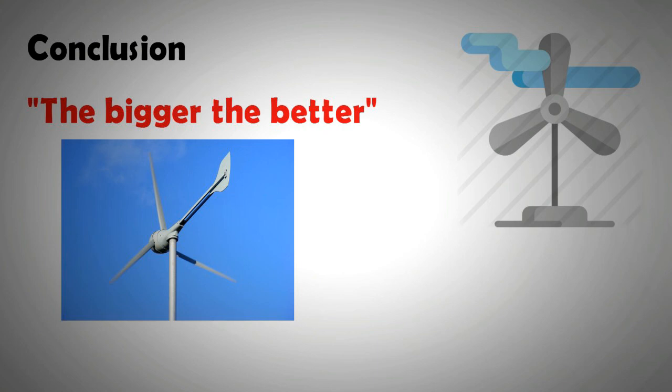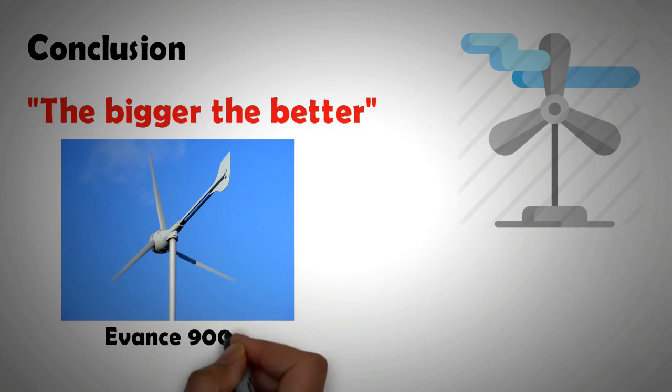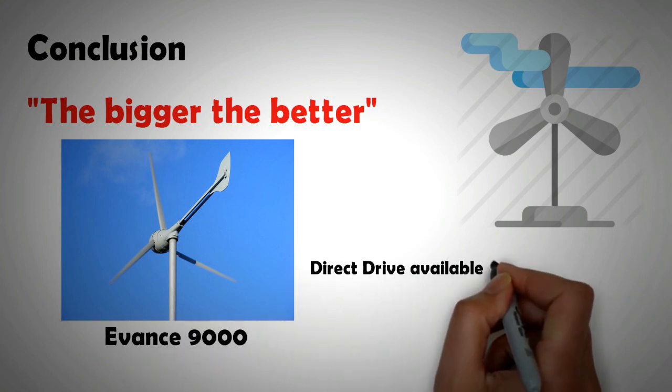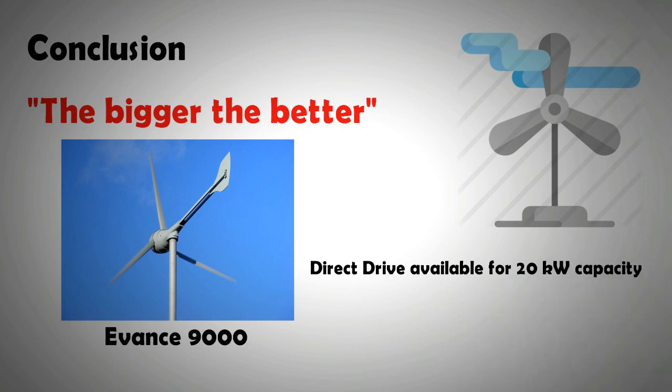the Evans 9000 wind turbine has a responsive blade pitch control that automatically changes the blade angle with changing wind speed. Similarly, direct drives are now available from power rating as low as 20 kilowatts.